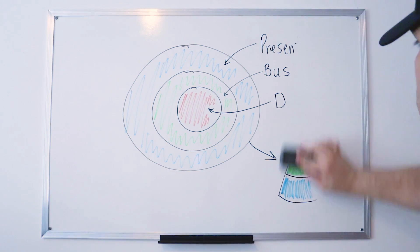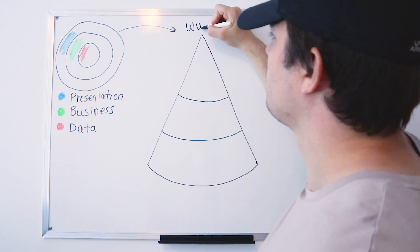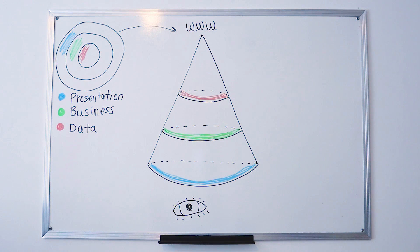Let's redraw everything with the cone in the center. We have the data on top, the business in the middle, and the presentation at the bottom. Since the bottom is the presentation, it's what the user can see. The higher you go up the cone, the closer you are to the database — for example, this is where you get your information from an API.